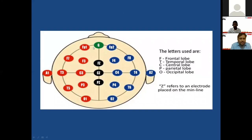By convention in EEG, odd numbers (1, 3, 5) are used for left-sided recordings, and even numbers (2, 4, 6, 8) are for right-sided recordings. There are also alphabets: F for frontal, T for temporal, O for occipital, P for parietal, and C for central. These letters determine the location of the electrodes on the scalp.